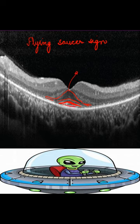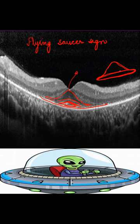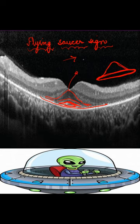Similarly, the interdigitation zone — although the RPE is present entirely — it's a flying saucer. The flying saucer is a dome-shaped abnormality or appearance of the macula or fovea that happens because of the attenuation of the outer retinal layers in the parafoveal area with the preservation of the sub-foveal outer retinal layers. This is called the flying saucer sign, and it is seen in hydroxychloroquine toxicity.